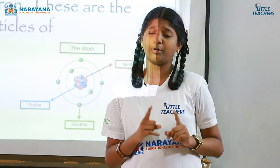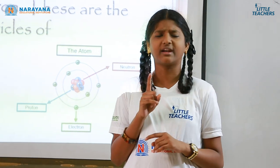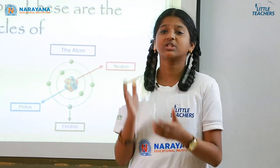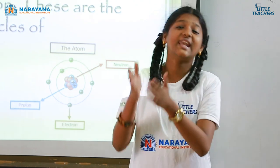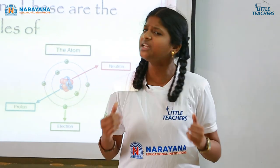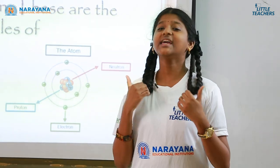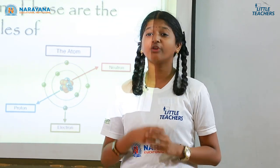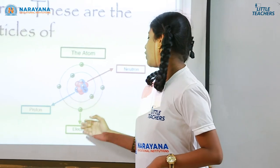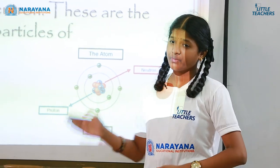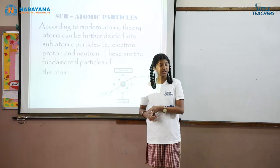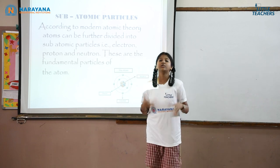An electron is a subatomic particle. A subatomic particle is a particle which is much smaller than an atom and which lies in an atom, as the name suggests. But they are not just any particles — they are charged. An atom consists of three subatomic particles: electron, proton, and neutron. Electron is negatively charged, proton is positively charged, and neutron is neutral — it is neither positive nor negative.